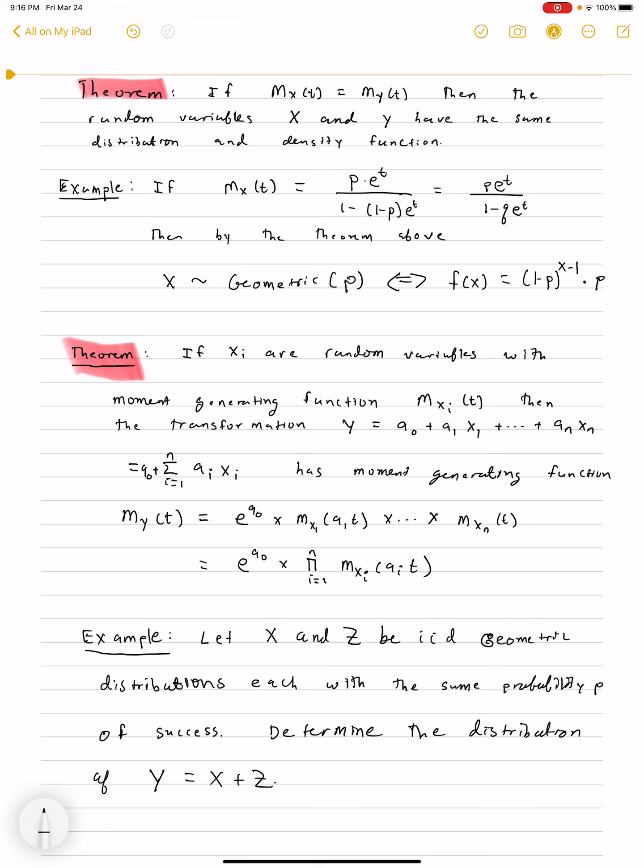Then there is a correspondence of moment generating functions. The moment generating function will be the product of e^(a_0 t) times M_X1(a_1 t), and that is function composition, a_1 t being the composite, and you multiply all the way through M_Xn(t), and it's written in product notation there in the bottom.